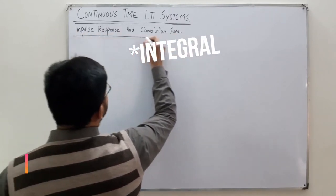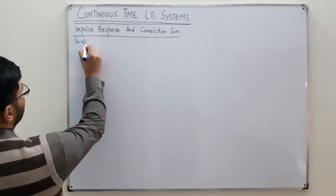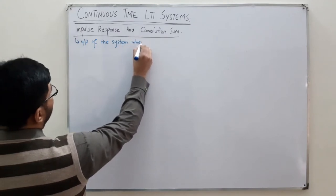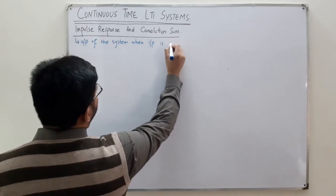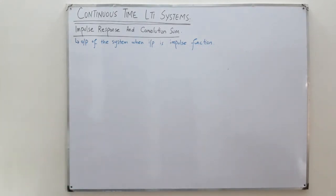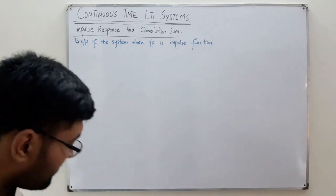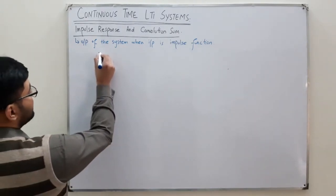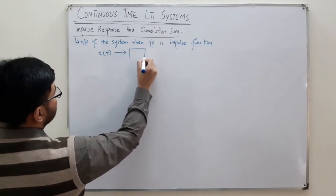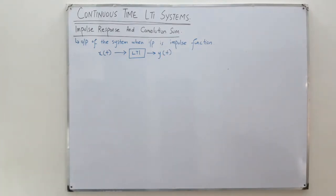Do you know what an impulse response of a system is? The impulse response is the output of the system when the input is an impulse function. This means it is the name given to the output for a specific input. We have x of t, which we give to an LTI system, and the output is y of t.